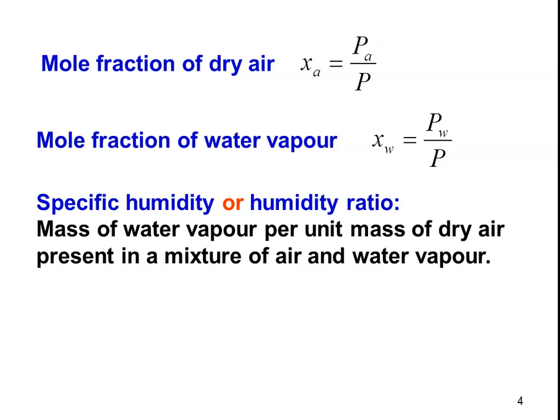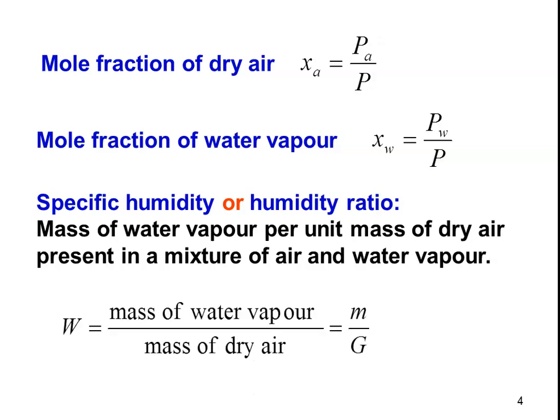We define the first psychrometric property: specific humidity or humidity ratio. The atmospheric air or air in the air conditioned space is a mixture of water vapor and air. The mass of water vapor per unit mass of dry air present in a mixture of air and water vapor is defined as specific humidity or humidity ratio. W is the notation: capital W equals mass of water vapor divided by mass of dry air — in kg per kg of dry air.